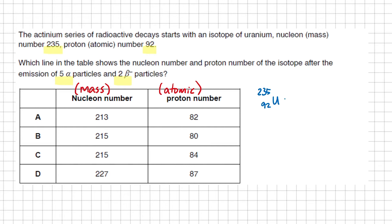The mass number of an alpha particle is 4 and the atomic number is 2. So after five alpha decays, there should be a decrease of 20 in the mass number and the atomic number should drop by 10.